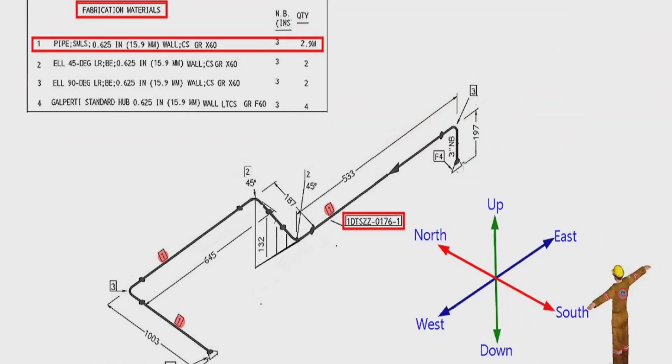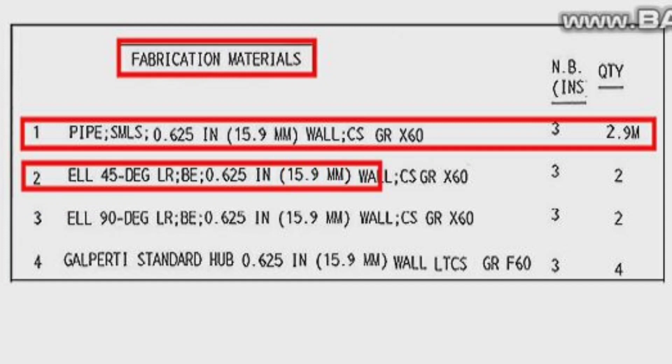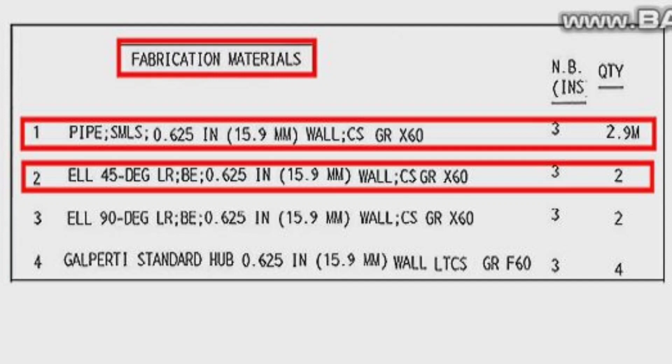Detail number 2 was used in two places in the pipe drawing. Let's look at the material list. Detail number 2, 90-degree elbow, long radius, wall thickness is 0.625 inches or 15.9 millimeters, carbon steel, grade is X60, the elbow size is 3 inches, quantity are two pieces.